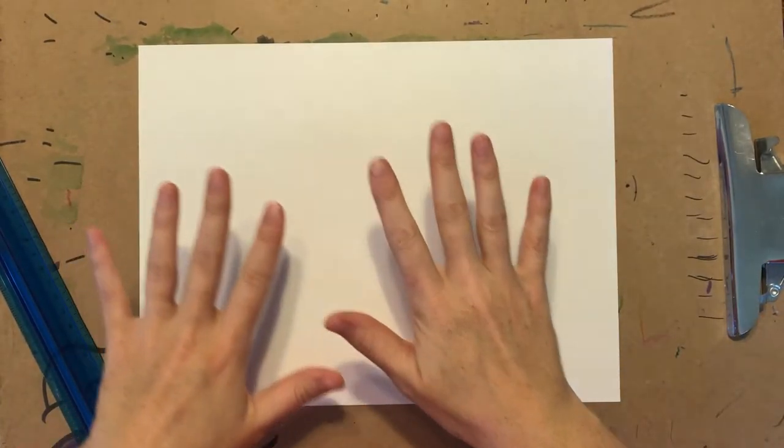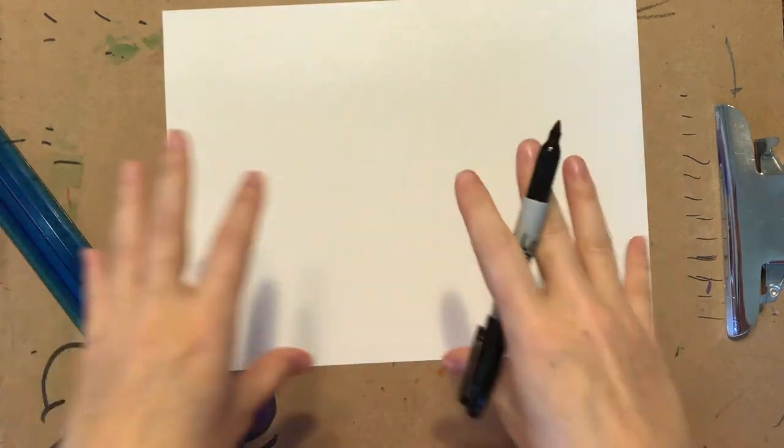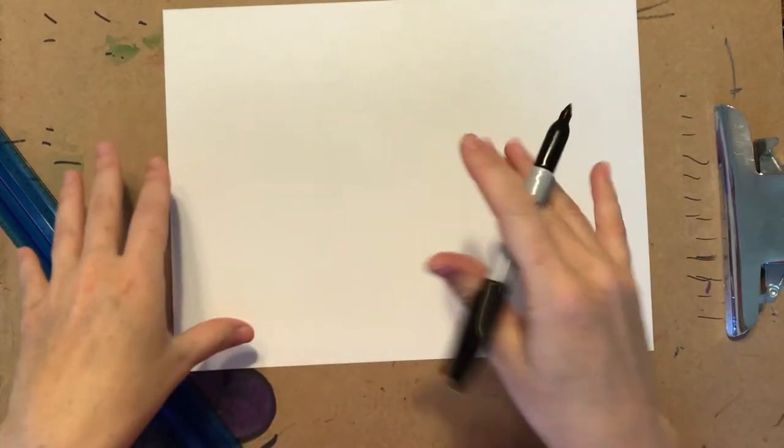Hi boys and girls, we are going to work on the background for our Bridget Riley artwork. It's kind of a two-part project, so the very first thing you're going to need to do is create an X across your paper.